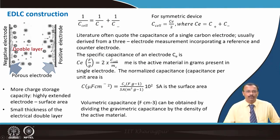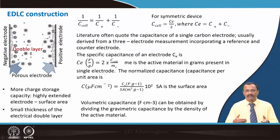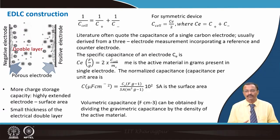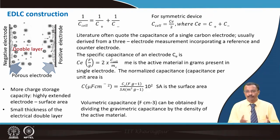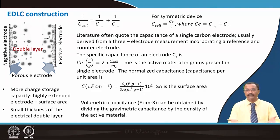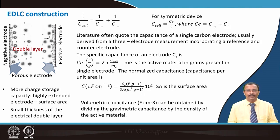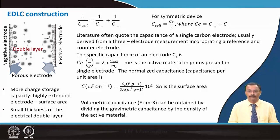More charge storage capacity comes from highly extended electrode surface area, but it also depends on pore type — whether tortuous or interconnected — so the electrolyte can penetrate and form the double layer. Small thickness of the electric double layer gives more capacitance in EDLC.